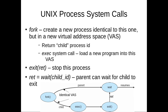Fork is the system call for actually creating a new process. The new process that's created is identical to the original, except for two things: it has a different process identifier, and the return value for the fork call is variant depending on which process we're executing in when fork returns.